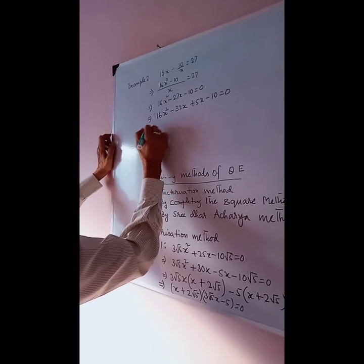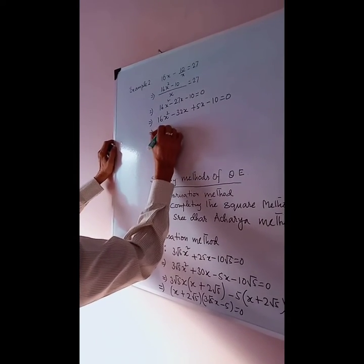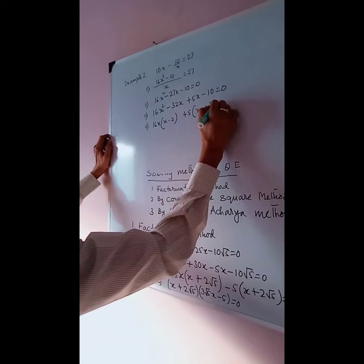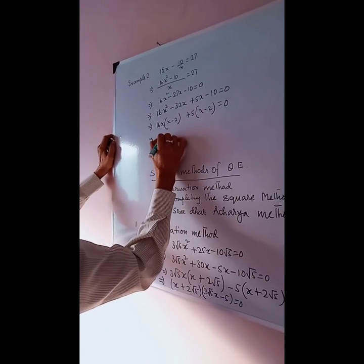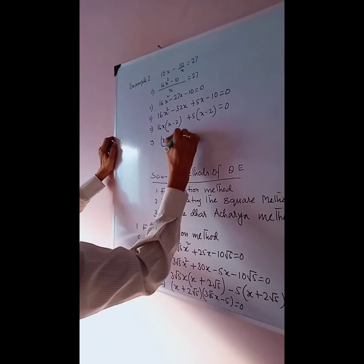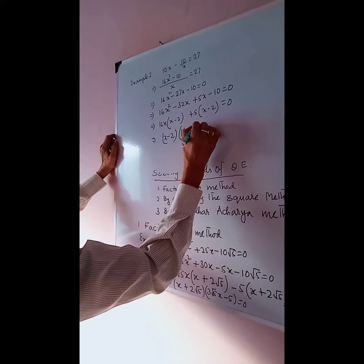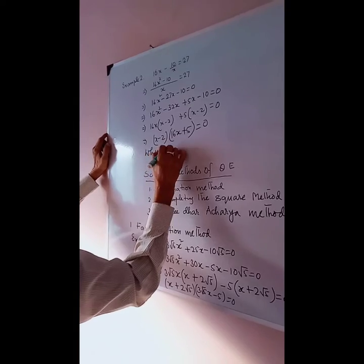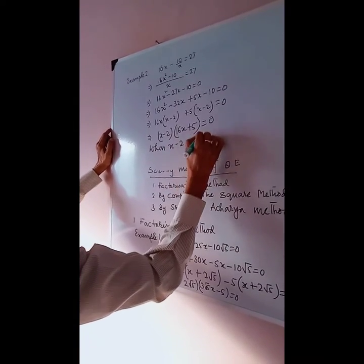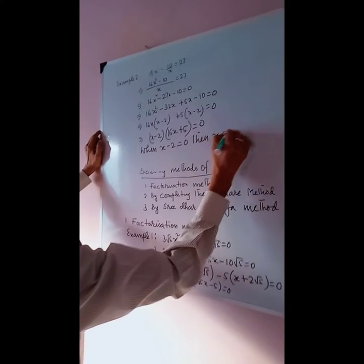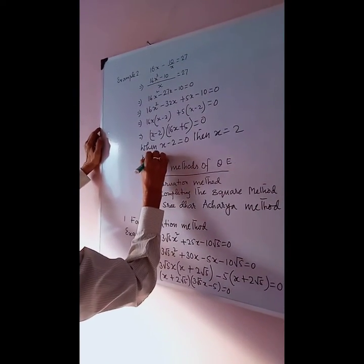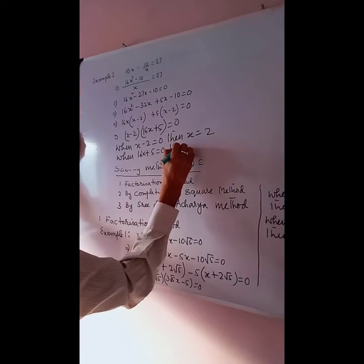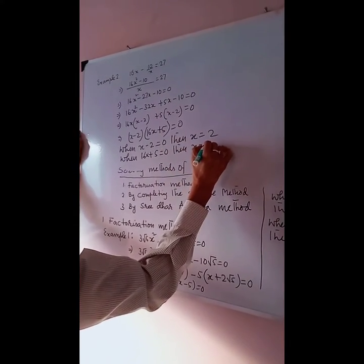Now take 16x as common from the first two terms, giving x minus 2. Then take 5 common from the last two terms, giving x minus 2. Take out the common factor x minus 2, and here 16x plus 5 equals 0. When x minus 2 equals 0, then x equals 2. When 16x plus 5 equals 0, then x equals minus 5 by 16.